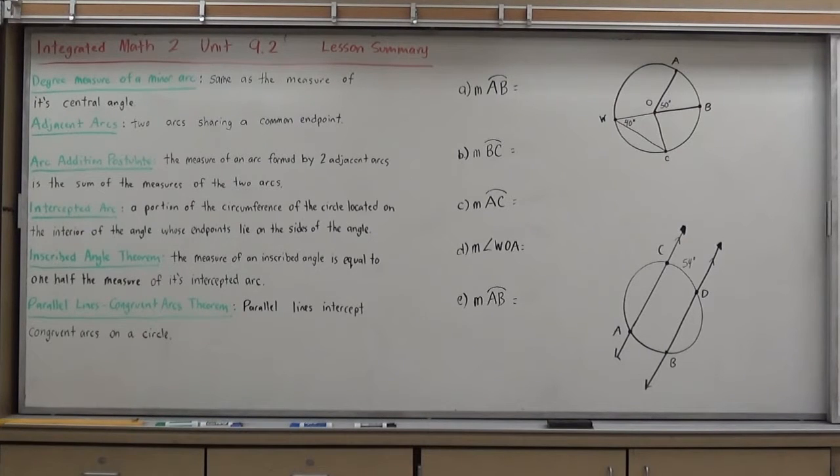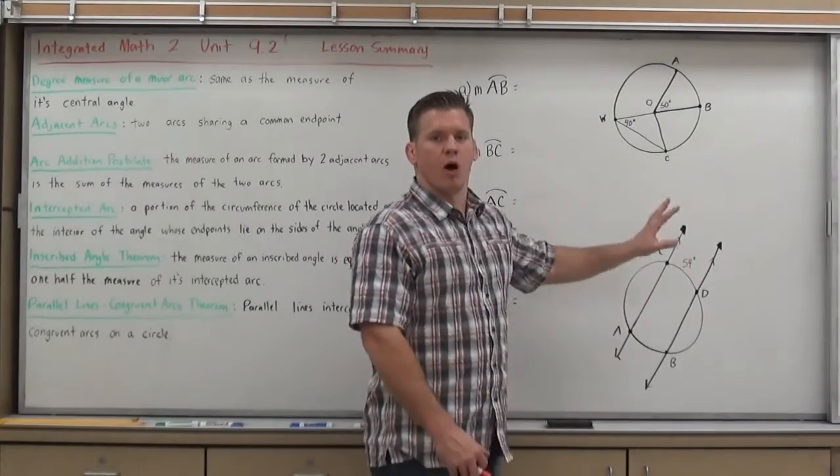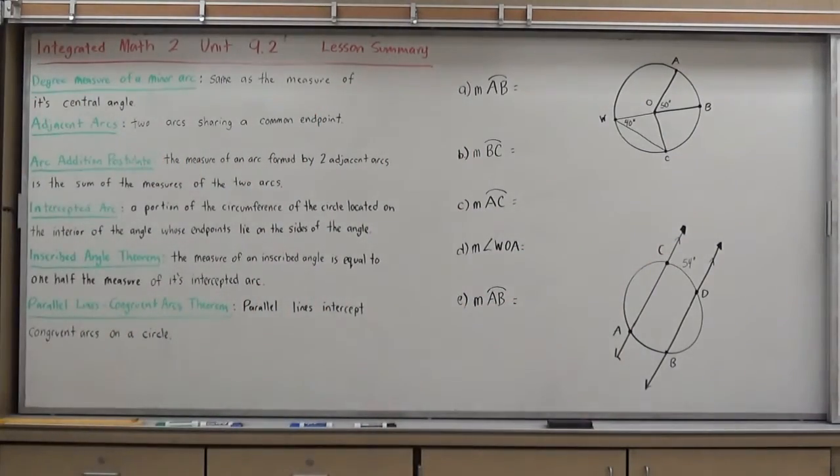And I believe there's a problem in the book where they kind of let you explore that a little more in detail. But ultimately, to summarize what you would have learned from that, the measure of the inscribed angle in a circle is always equal to one half the measure of its intercepted arc. Last theorem we'll kind of look at in 9-2 is the parallel lines congruent arcs theorem. That states that parallel lines intercept congruent arcs on a circle.